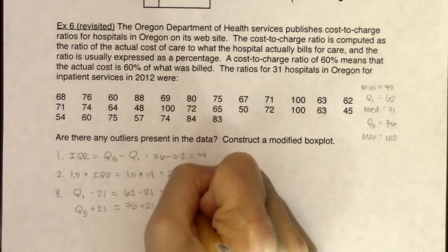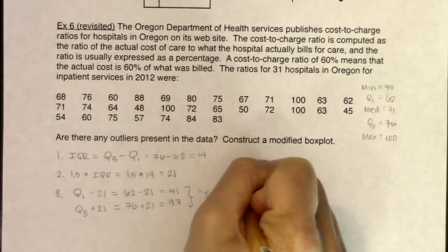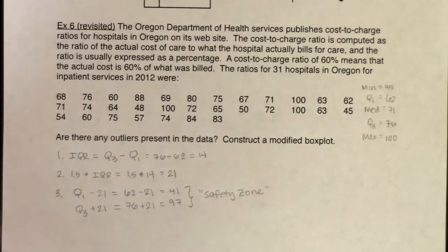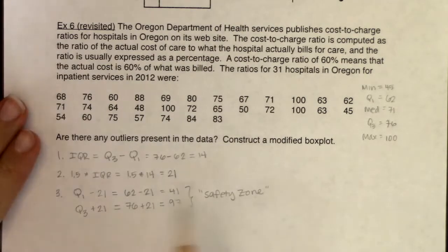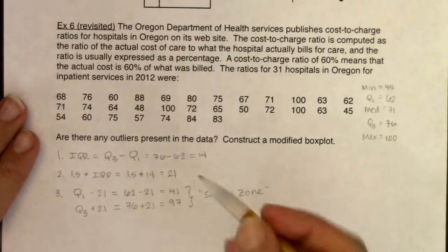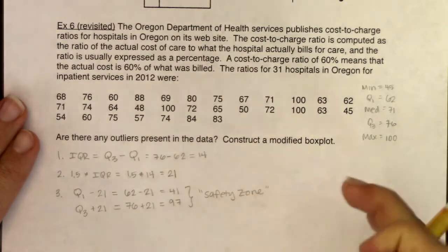I'm putting 'safety zone' in quotes because it's not an official stats term — you won't find this in a book. It's something I made up to help determine if outliers are present. Any data values between 41 and 97 are safe, meaning they are not outliers. Any data values outside this safety zone are quite literally outliers.